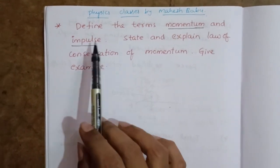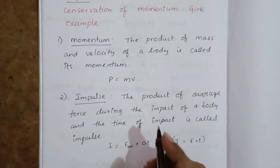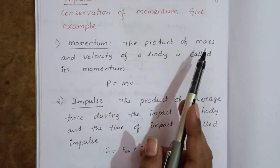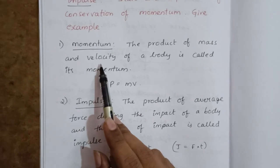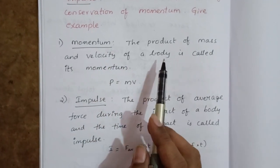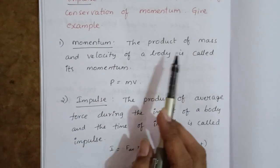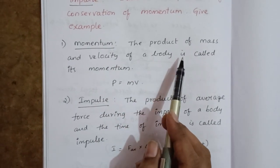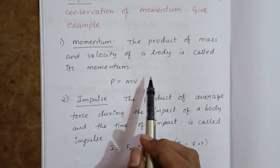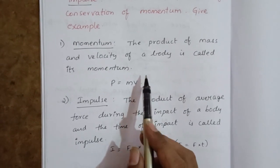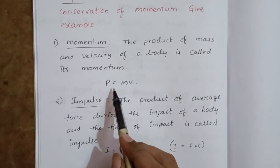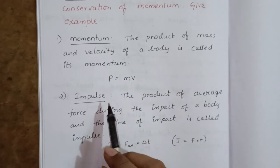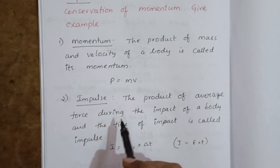Now, define the terms momentum and impulse. Momentum is the product of mass and velocity of a body. Momentum is denoted by the letter P. So P equals mass into velocity, that is P equals m into v.